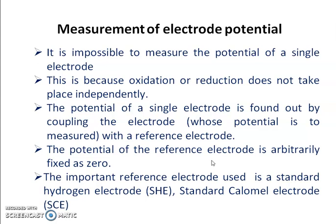From our previous lecture you must have understood what is an electrode and how a potential is developed across an electrode. Depending on the nature of the metal, the electrode can be an anode or a cathode. The anode is the electrode where oxidation occurs, meaning the metal loses electrons, whereas the cathode is the electrode where reduction occurs, meaning there is a gain of electrons.